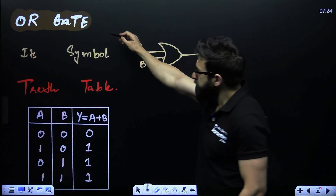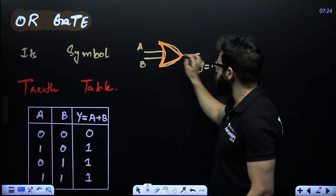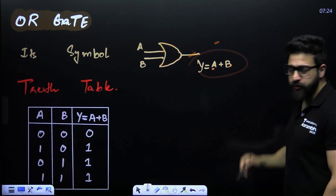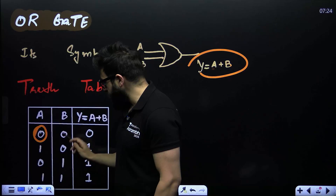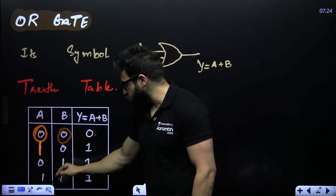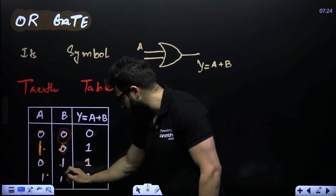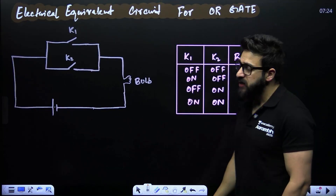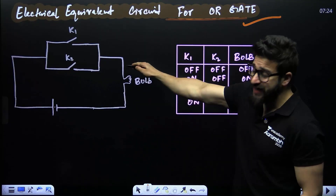For the OR gate — its symbol looks like a curved shape — its job is to do addition, so Y = A + B. Truth table: zero plus zero is zero, one plus zero is one, zero plus one is one, one plus one is one. This is the truth table of the OR gate.